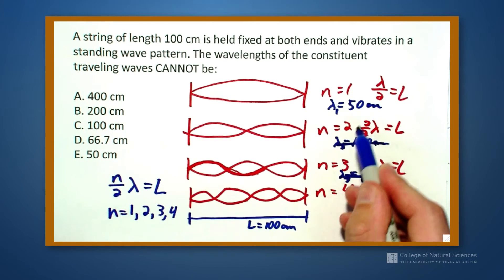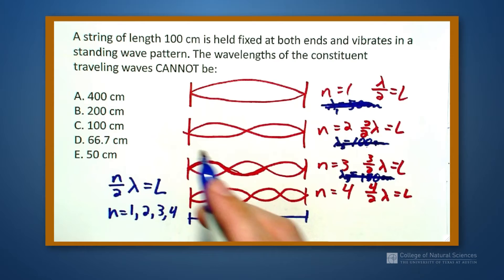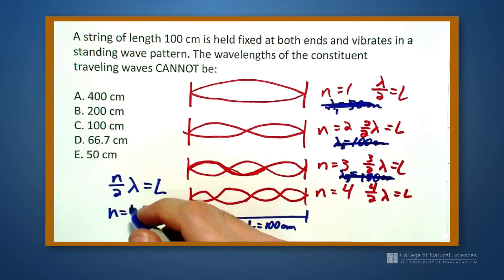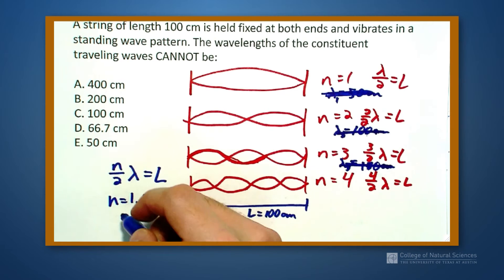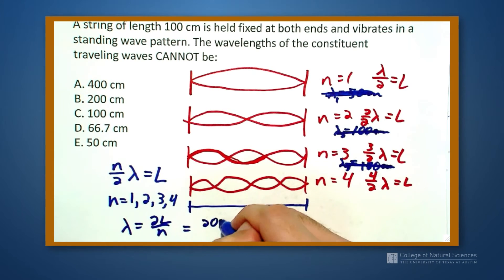These are not right. I was not paying attention to my equation. I have to invert this. This equation right here says that lambda is equal to 2L over n which is equal to 200 centimeters over n.